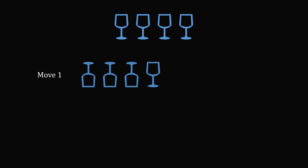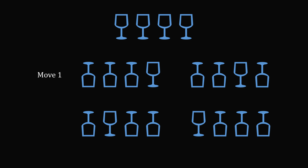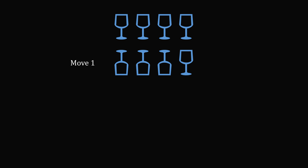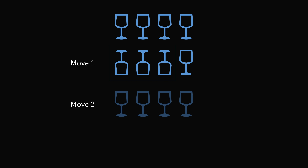So in the first move, there are four different ways we could invert the glasses. But look at these four different cases — in all of them, exactly one glass is turned up and three glasses are turned down. So we can treat each of these cases as basically the same result. We just want three glasses turned down and one glass turned up, so we might as well consider the first case. Move one will always result in three glasses turned down and one glass turned up. Now in move two, we could invert those three glasses, but that would bring us right back to the beginning — a waste of a move.